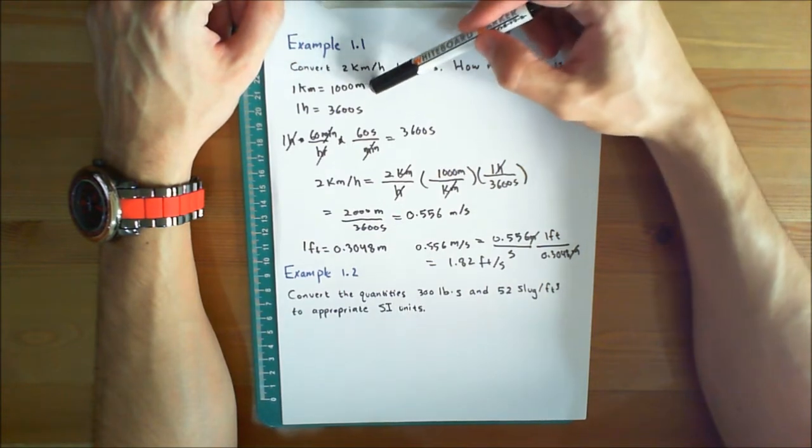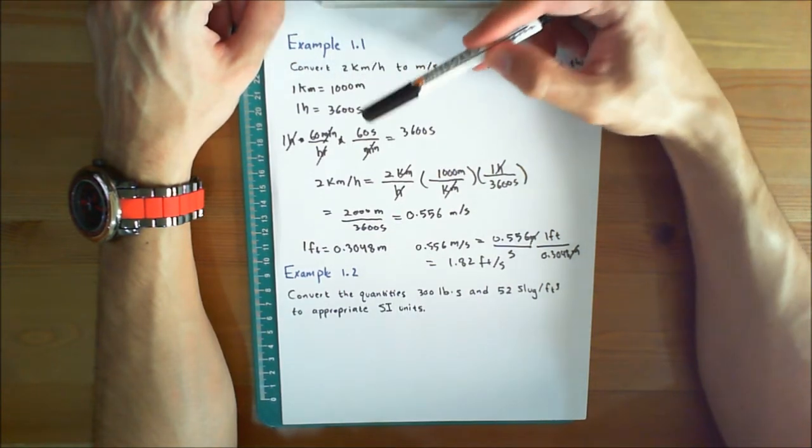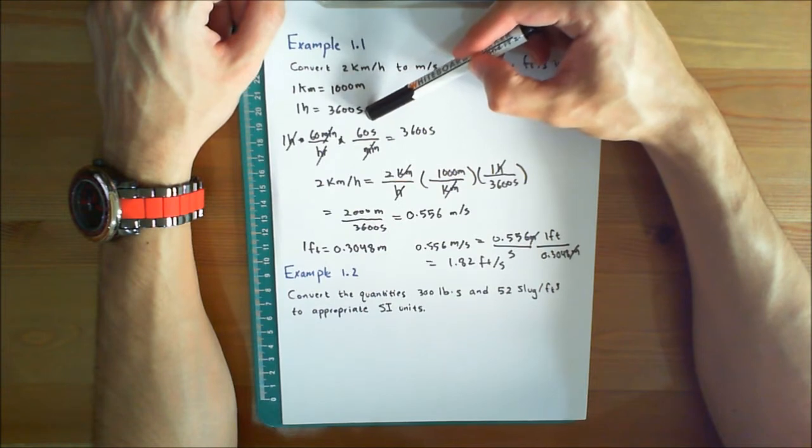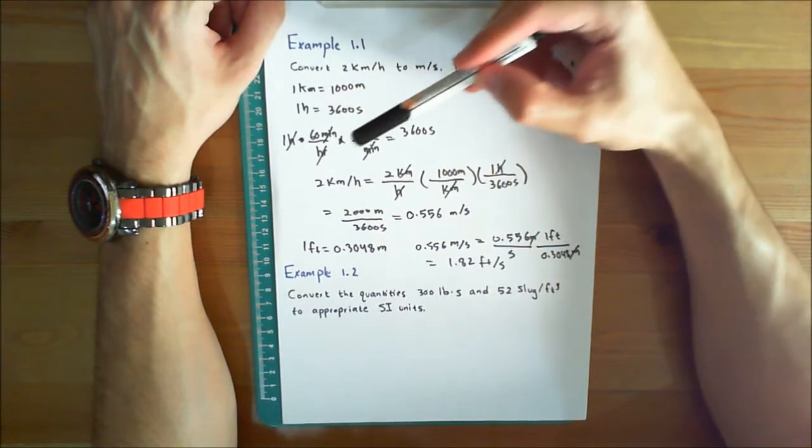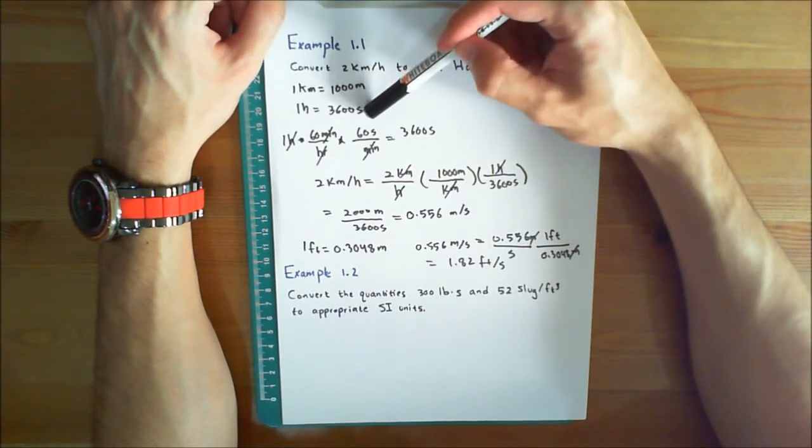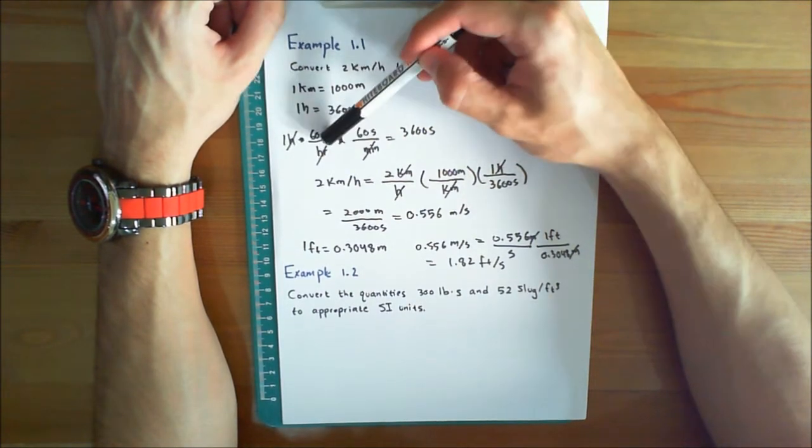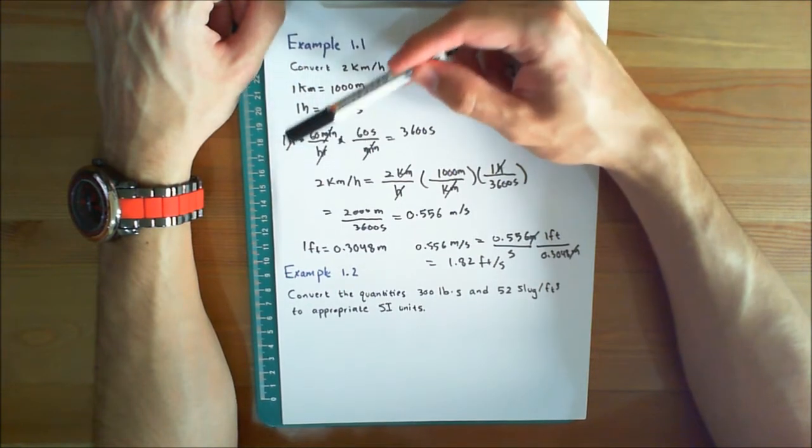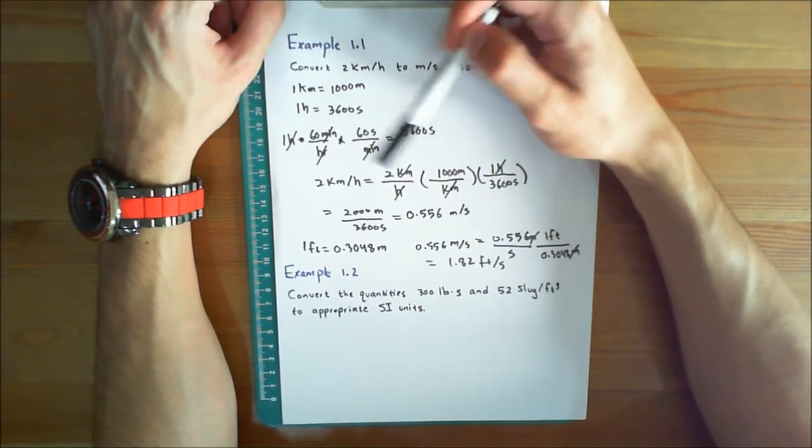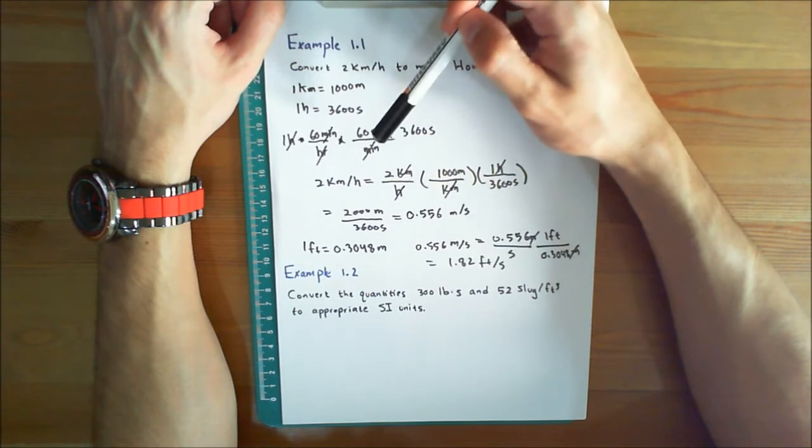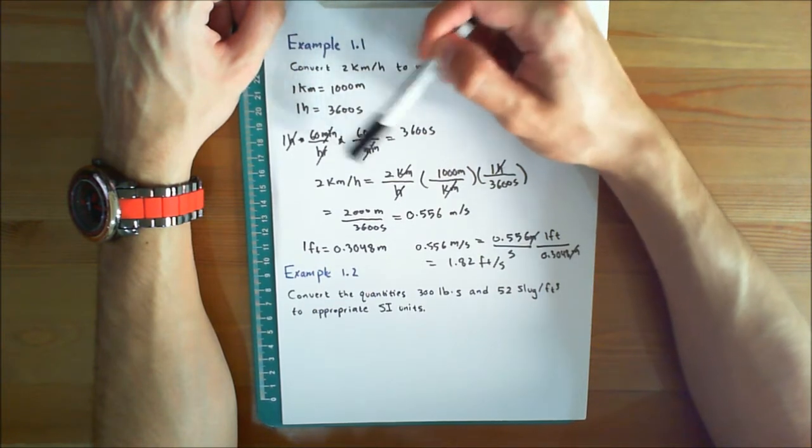Recall that 1 kilometer is equal to 1000 meters and 1 hour is equal to 3600 seconds. If you can't remember that 1 hour is equal to 3600 seconds, you can easily convert units. 1 hour times 60 minutes—you put them on top of each other so that you can cancel out times. 1 minute is equal to 60 seconds and you cancel out the minutes. This would give you 3600 seconds.